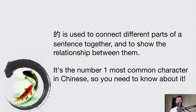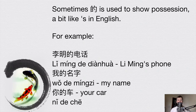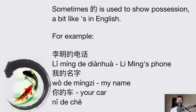The last 'de' is a little more difficult to understand and has a few different usages. In Chinese this character is also called 白小的. This character is actually the number one most common character in Chinese, so it's really important to know. It's often used to connect different parts of a sentence together and show the relationship between them. Sometimes 的 is used to show possession — the thing that comes after 的 often has a more important position in the sentence. A bit like apostrophe-s in English.